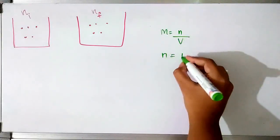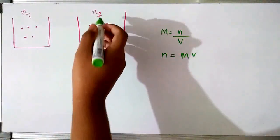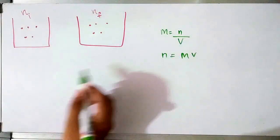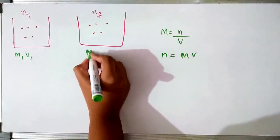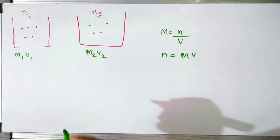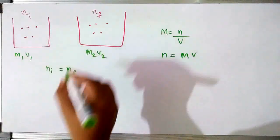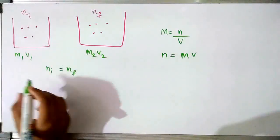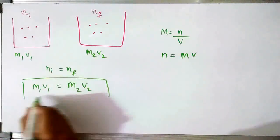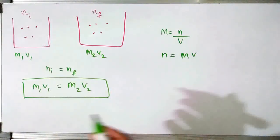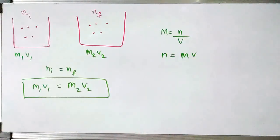Since molarity equals number of moles of solute upon volume of solution in litres, the number of moles equals M × V. If the number of moles of the initial and final are the same, that means M₁V₁ equals M₂V₂. This formula is used when two quantities are given and you have to find the molarity.